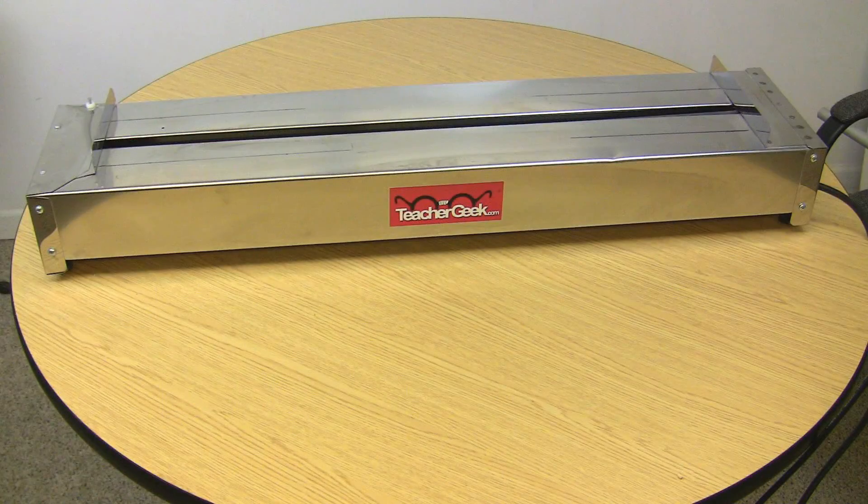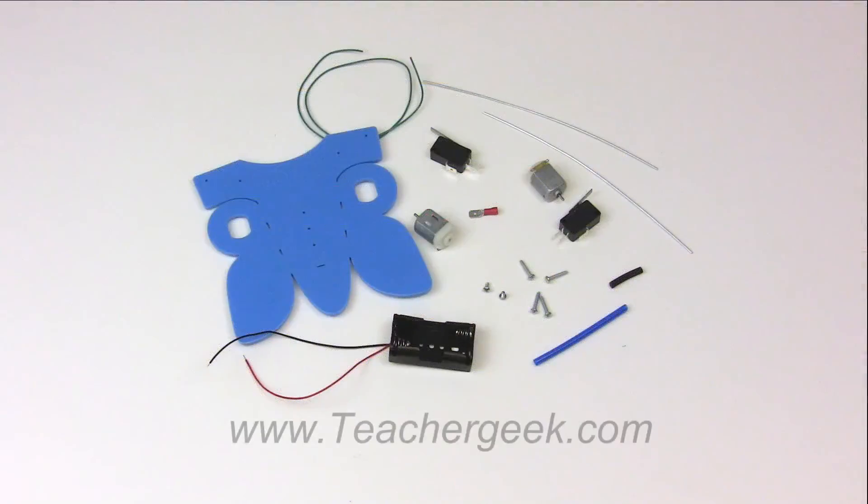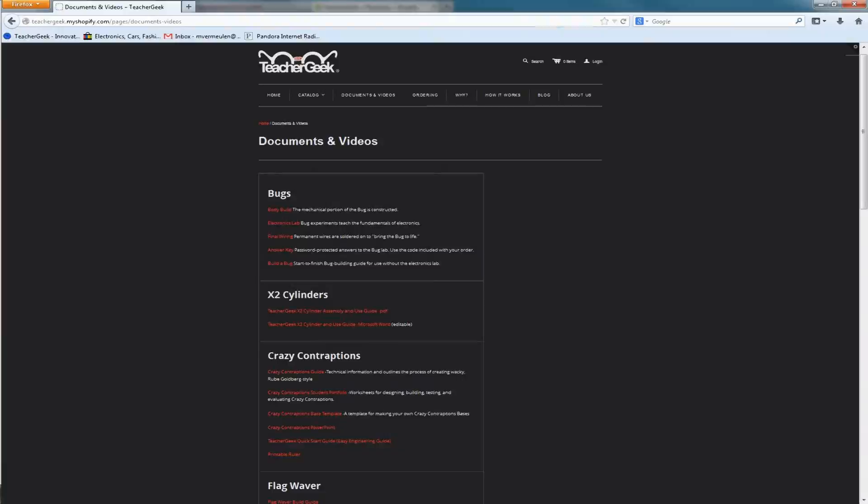To bend the bug you will need a heat source. You could either use a strip heater, a blow dryer, a heat gun, or even just running hot water over the bug. A list of the components can be found on the Catch the Bug Body Build Sheet, found on teachergeek.com. Components and free documents for this activity are available at teachergeek.com.